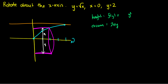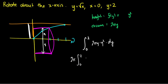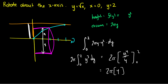We integrate between y = 0 and y = 2. The integral is from 0 to 2 of 2πy · y² dy = 2π times the integral from 0 to 2 of y³ dy. Taking the antiderivative: 2π · [y⁴/4] from 0 to 2 = 2π · (16/4) = 2π · 4 = 8π.